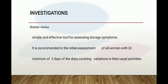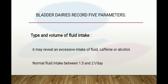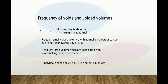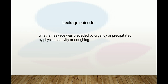Bladder diaries record five parameters: type and volume of fluid intake (revealing excessive intake of fluid, caffeine, or alcohol — normal fluid intake is 1.5 to 2 liters per day), frequency of voiding and voided volume (voiding more than eight times per day or more than once per night is abnormal), frequent small voided volumes with normal urine output can indicate detrusor overactivity, frequent large volumes suggest polydipsia or diabetes. Polyuria is defined as 24-hour urine output of more than 40 ml/kg. Leakage episodes — whether preceded by urgency or precipitated by physical activity — are also recorded.